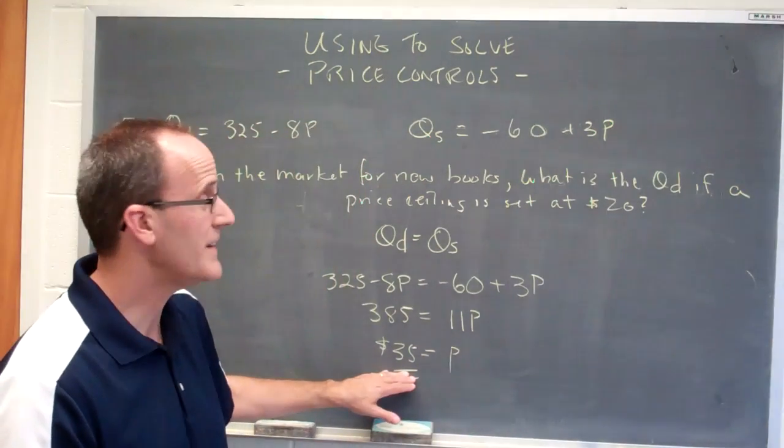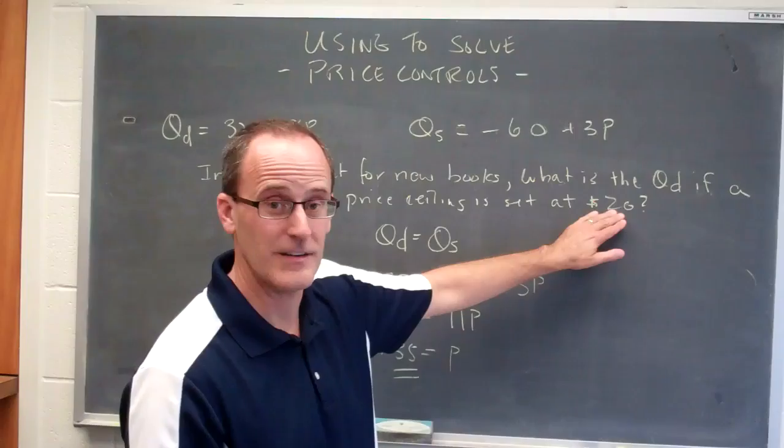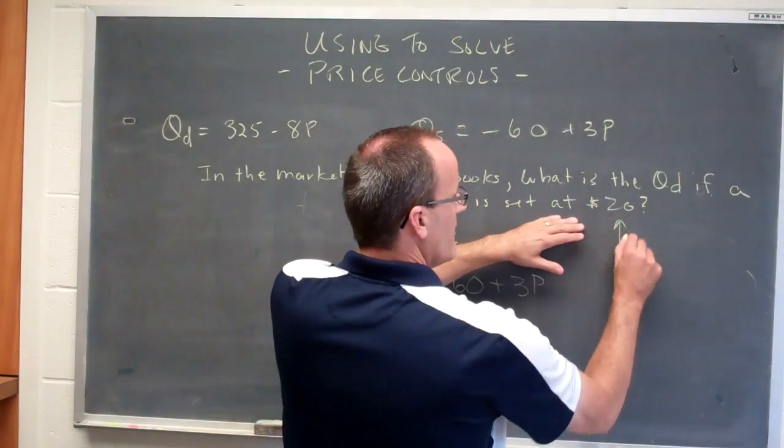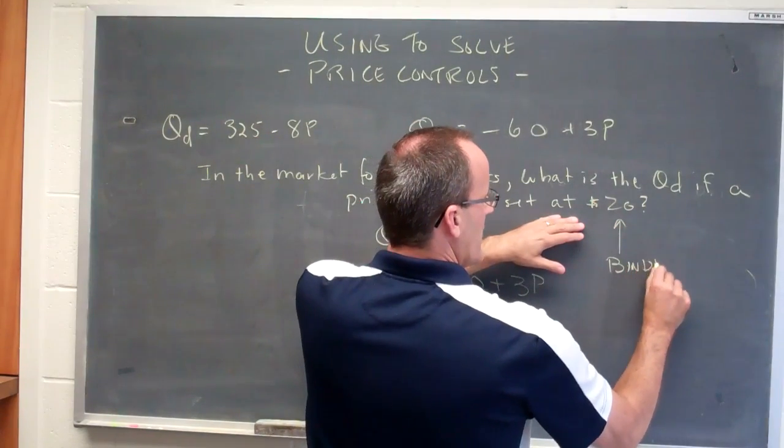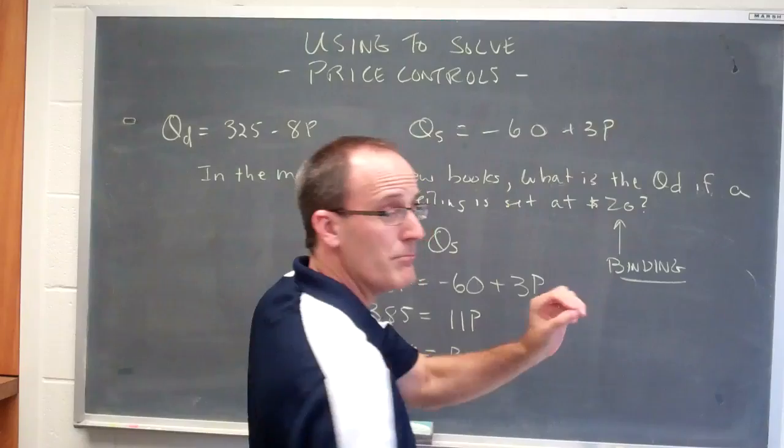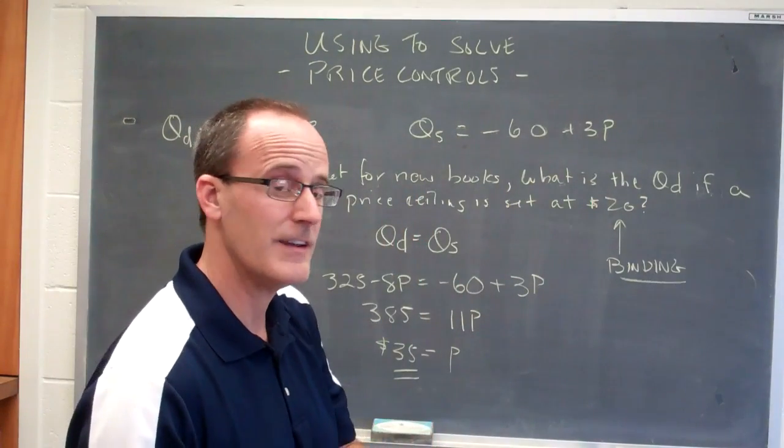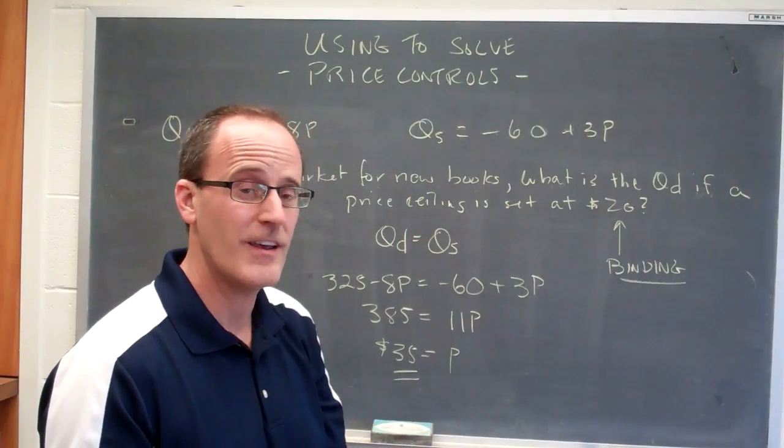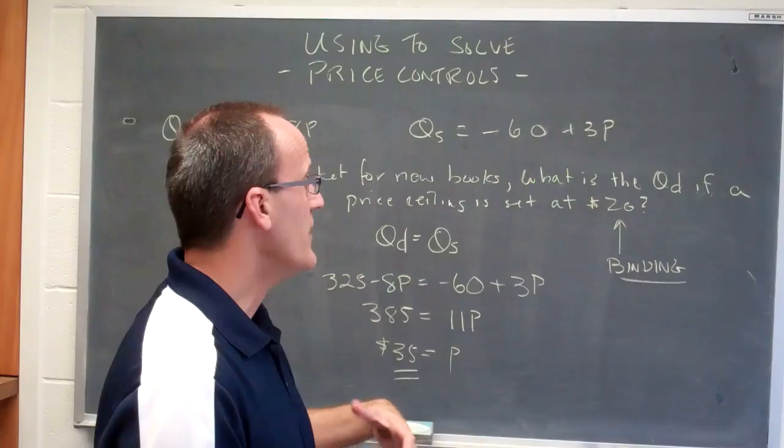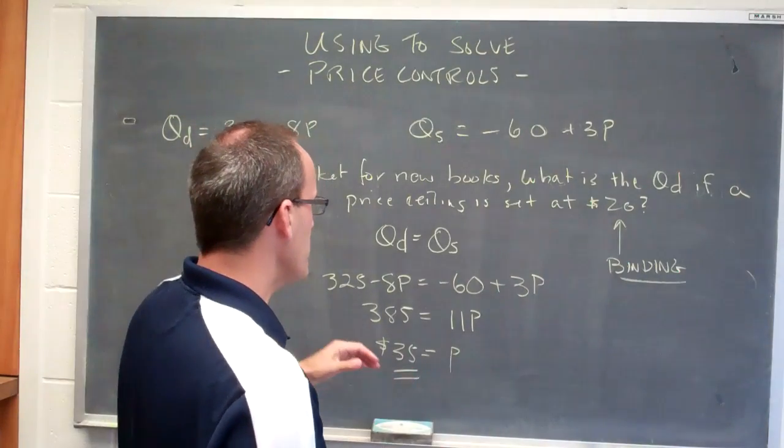Now, that means the market price is higher than the price ceiling, so this right here is binding, and because it's binding, all we do then is plug in the binding price to figure out what the quantity demanded would be.